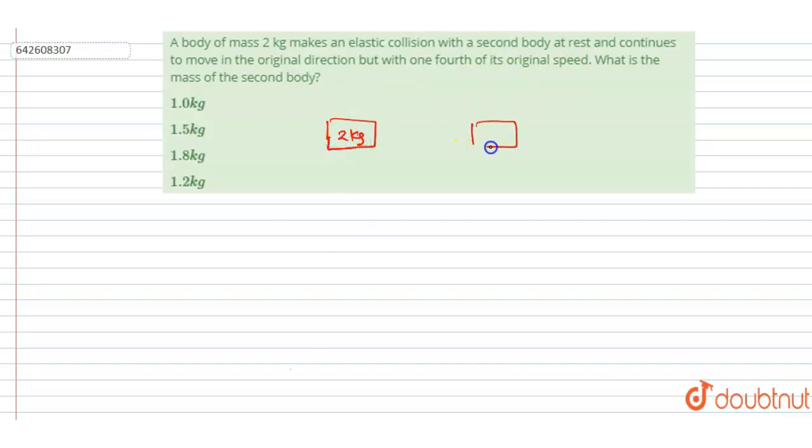and the mass of the second body is m. So if the 2 kg body is moving with some velocity v_naught, after the collision what happened is this 2 kg body continues to move in the same direction but with one-fourth velocity, and let's suppose this m mass will be moving with some v velocity. Then we have to find out this mass, right?